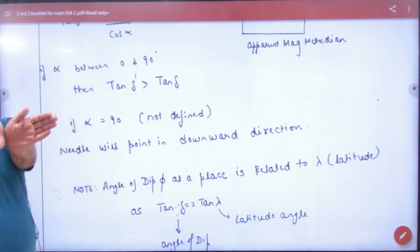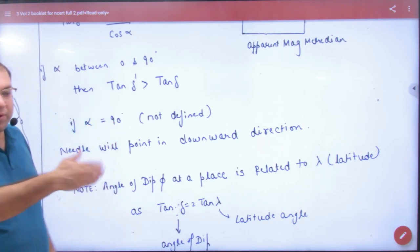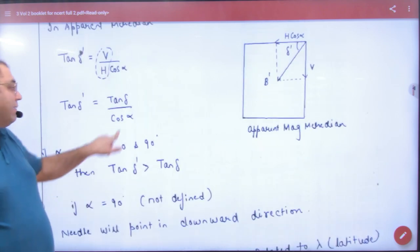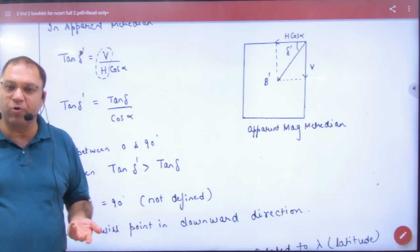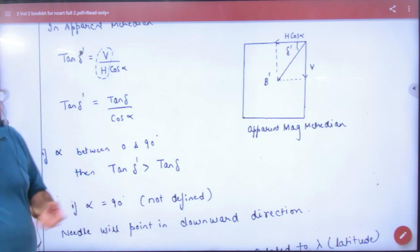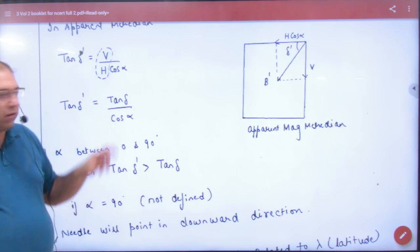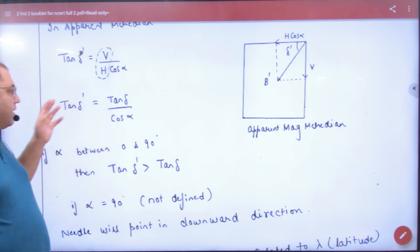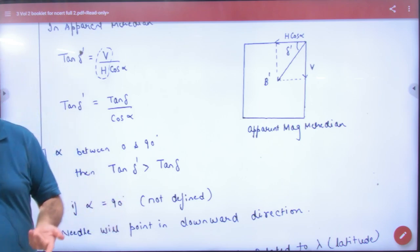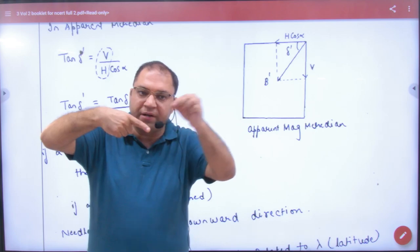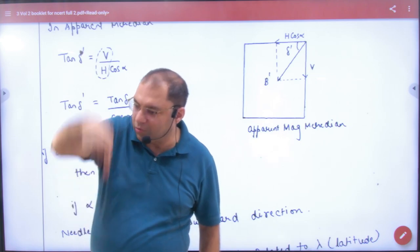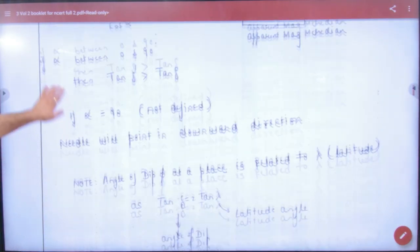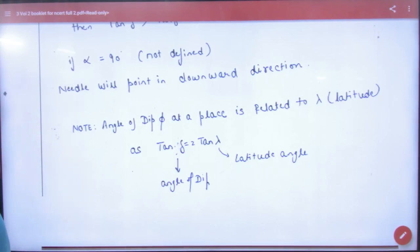Next, if the alpha is 90, if the meridians is 90, then the component is where to draw. So if it is 90 and the cos is 90, then it is not defined. So obviously in this case, delta dash is not defined. Or if you can say that, the cos of 90 is 0, anything by 0 is infinity, tan of delta dash is infinity, delta dash is 90. So delta dash means apparent meridian in this angle, delta dash is 90, which means needle is straight. It will be straight. So in this case, we can write this result. Needle will point in downward direction.